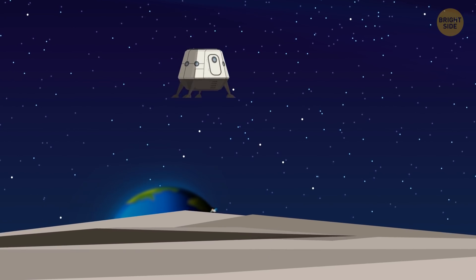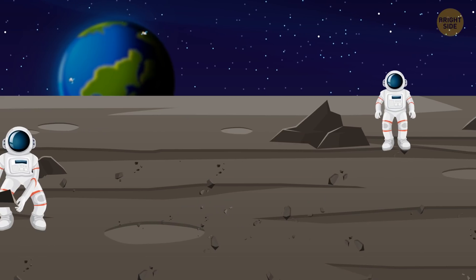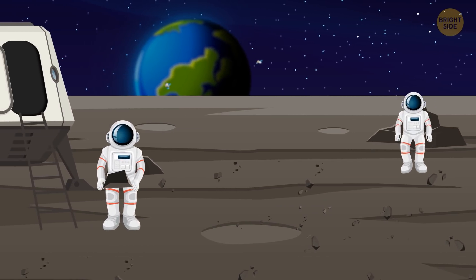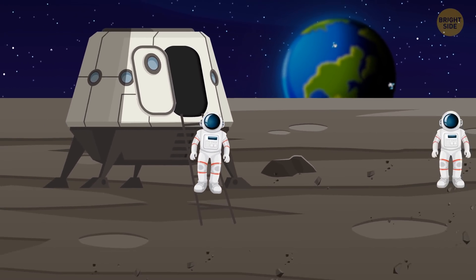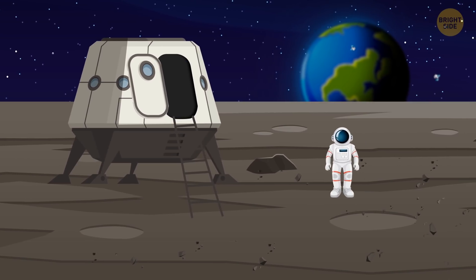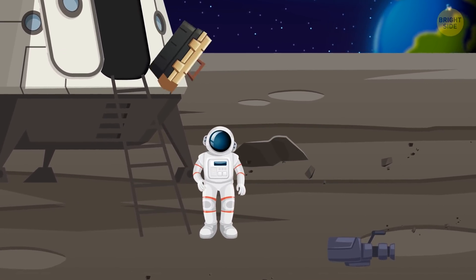And the first two people to be on the Moon left behind a whole pile of stuff. When they were about to go home, they took a lot of soil samples and rocks with them. And to carry it all away, they had to get rid of everything unnecessary onboard the lunar module. The TV camera,